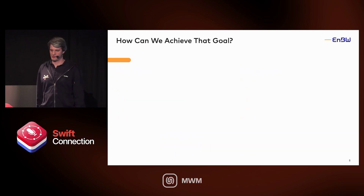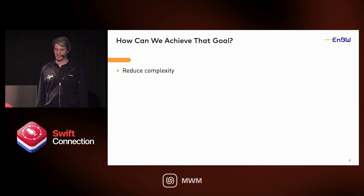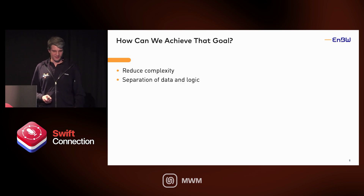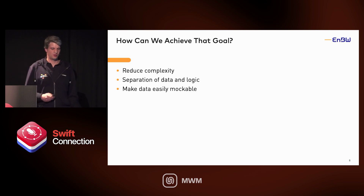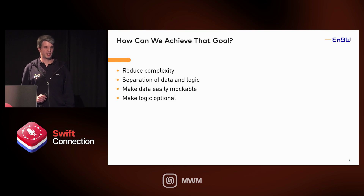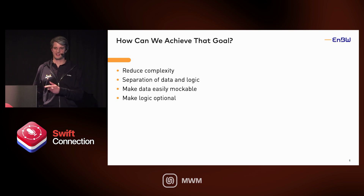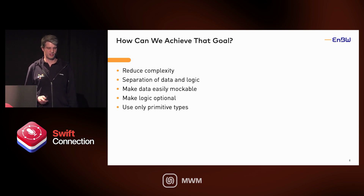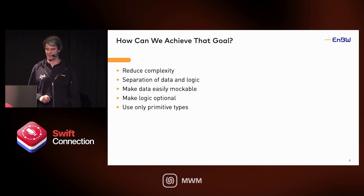So how can we achieve this goal? The first point is reducing complexity — making views small, and therefore the preview small, so they build faster. You can do that with separation of data and logic, making the data easily mockable and the logic preferably optional, so that in your preview you don't need to make API calls or database accesses. One point I always like is to only use primitive types in views — strings, bools, integers, doubles — so you can easily use them in the preview.